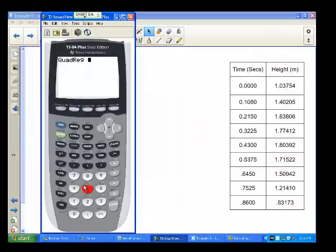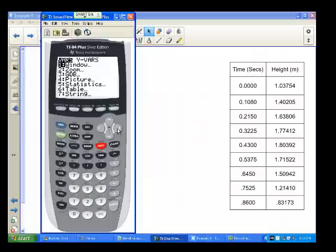We also want to graph this and see how things work. To get our graph ready, hit the VARS key, choose the YVARS button, and choose Function. We have all the different places to put this. Usually we'll want it in Y1, and hit Enter.